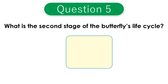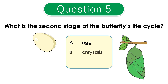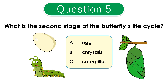Question 5: What is the second stage of the butterfly's life cycle? A: egg. B: chrysalis. C: caterpillar. The correct answer is C: caterpillar.